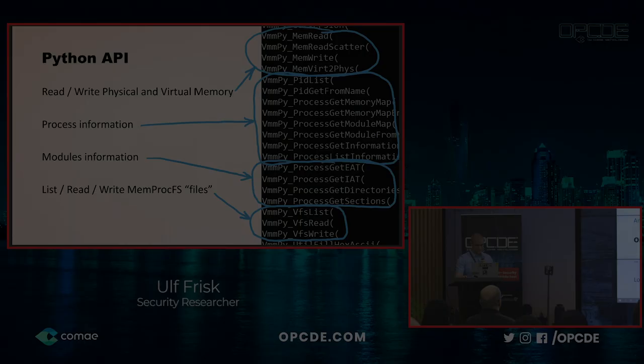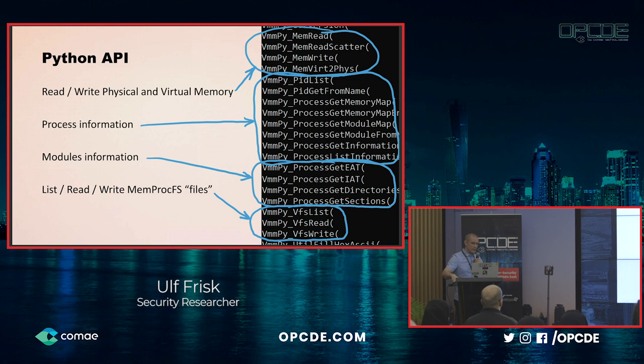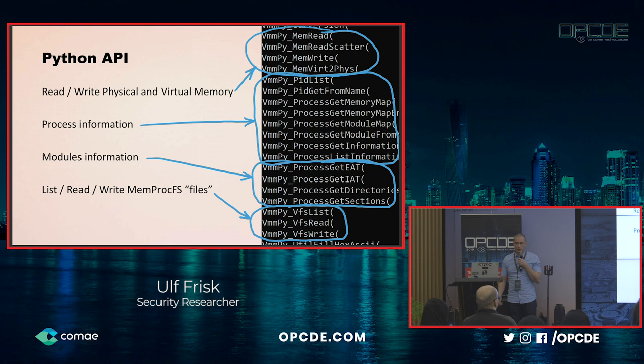The Python API has memory read and write functionality — we can both read physical and virtual memory. We can retrieve various kinds of process information: listing PIDs, retrieving which DLLs are in specific processes, and for each DLL, we can retrieve exported functions, imported functions, sections, and things like that.